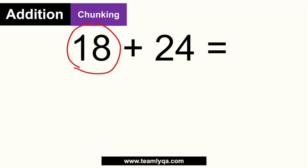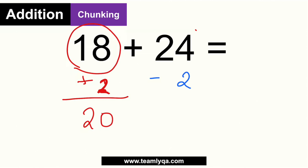For example, looking at 18: it only takes 2 more to reach 20, so 18 plus 2 equals 20. To balance this out, I take that 2 from 24, giving me 22. Adding those two numbers — 20 plus 22 — gives me 42.